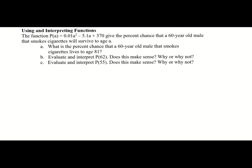Now we've been given the function and we need to interpret it. Our function is P of A equals 0.01 times A squared minus 5.1 times A plus 370, and this gives the percent chance that a 60-year-old male who smokes cigarettes will survive to age A.